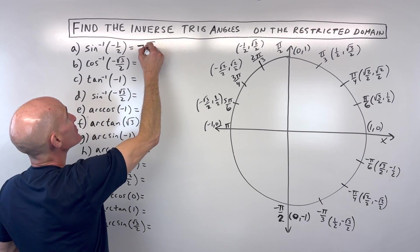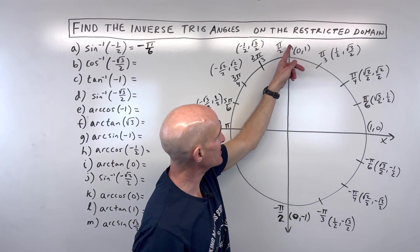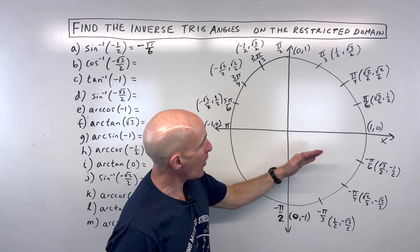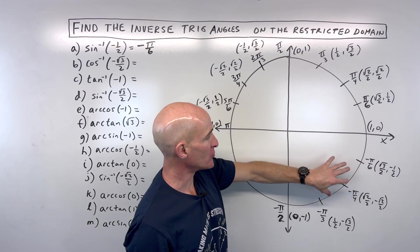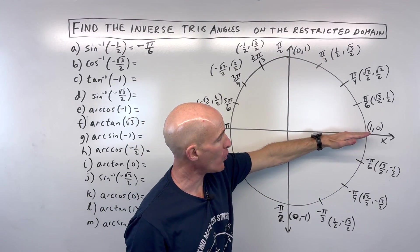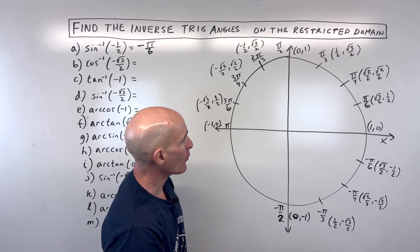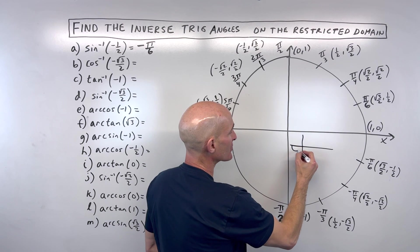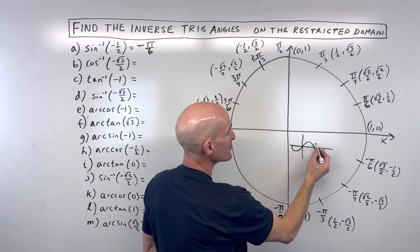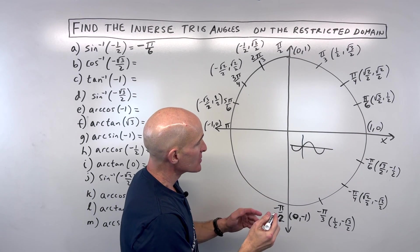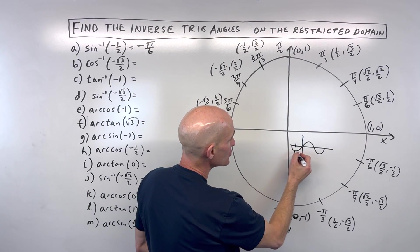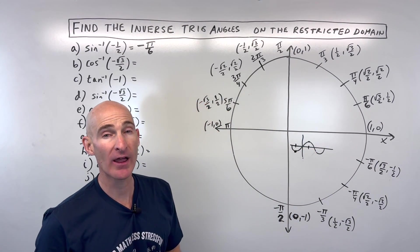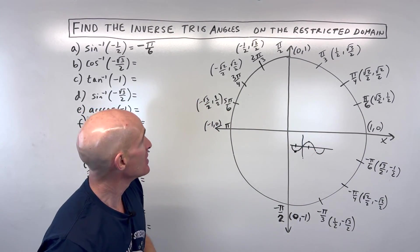Some students will ask why not say this is 330 degrees or 11 pi over six. Well, you want to stay from negative pi over two to positive pi over two. So if you end up in the fourth quadrant, you want to make that a negative angle. If you graph sine, you can see how it fails the horizontal line test. So mathematicians decided to restrict it from negative pi over two to positive pi over two — that way it passes the horizontal line test and we only get one answer.